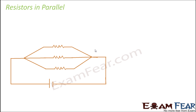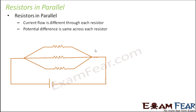Now let's talk about resistors in parallel combination. In this type of combination, one end of all the resistors are connected together. With three resistors R1, R2, R3, one end of all the resistors is connected together at a point, and the other end of all the resistors is again connected together at another point. This is the parallel combination.